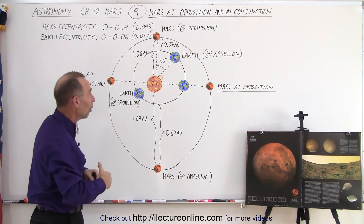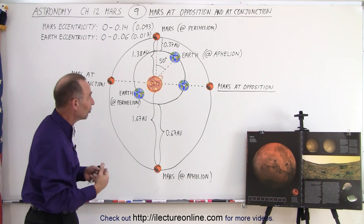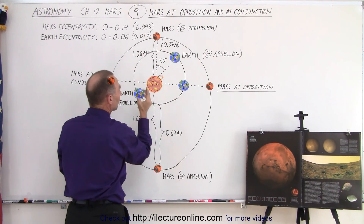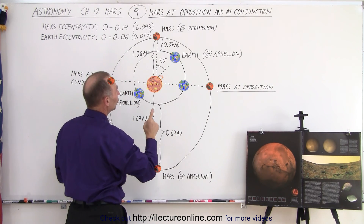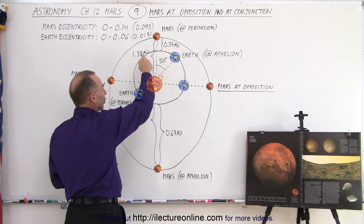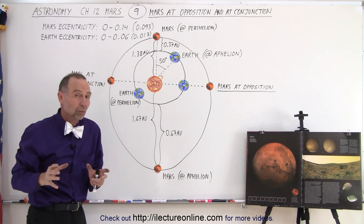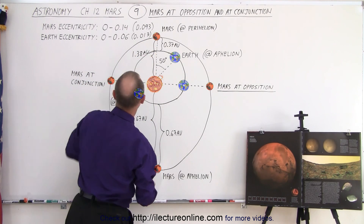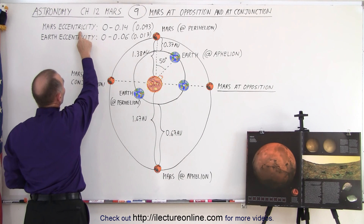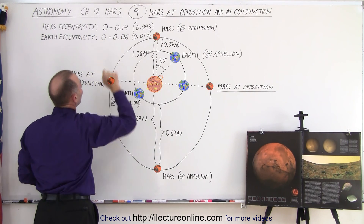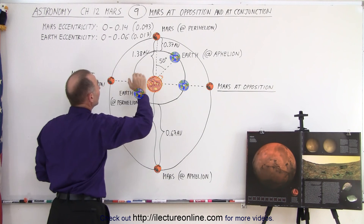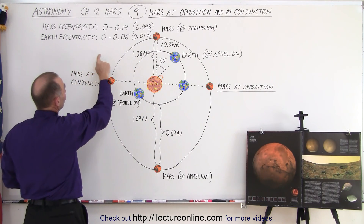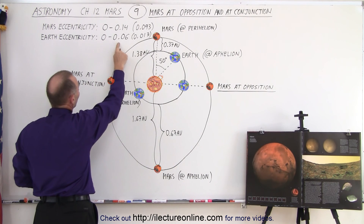This doesn't stay that way over the hundreds and thousands of years. As the perihelion and aphelion positions change for each orbit, all this will change. Not only that, but the eccentricity of the orbit changes — in other words, the elongation of the orbit will change over time. For Mars, the eccentricity changes anywhere from 0 to 0.14; currently it's at 0.093. The same for Earth: the eccentricity will change from 0 to 0.06, and currently it's at 0.017.